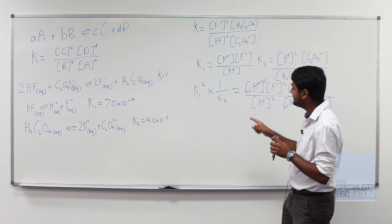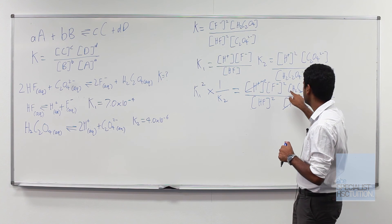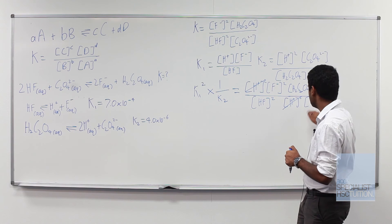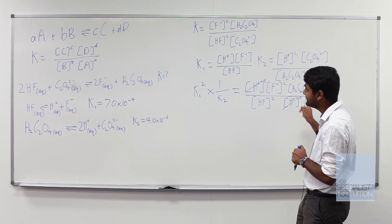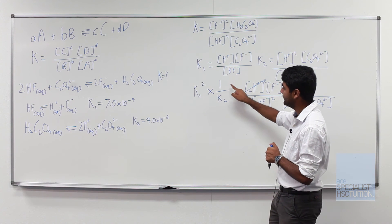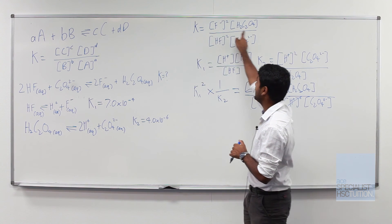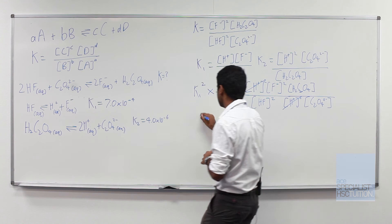As seen over here because both H pluses cancel out, what that means is F- squared H2C2O4 all over HF squared multiplied by C2O4^2- is the same as K1 squared multiplied by 1 over K2 which is the same as the K value over there.